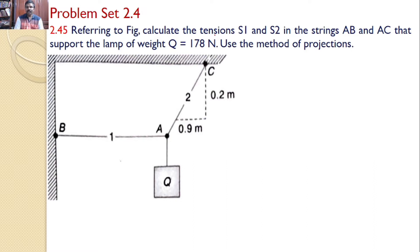Referring to figure, calculate the tensions S1 and S2 in the strings AB and AC that support the lamp of weight Q equal to 178 Newtons. Use method of projections. That means there are two strings AB and AC connected with a lamp of weight 178 Newtons. Our interest is to find the tensions in the strings AB and AC.